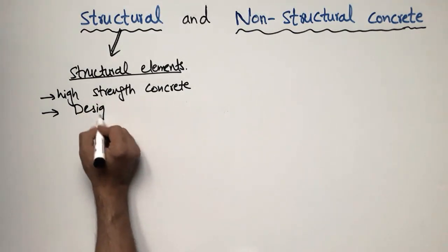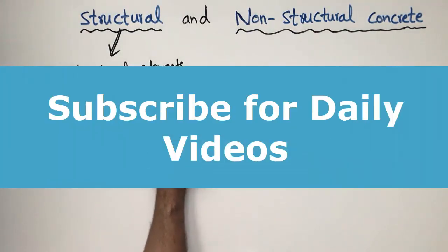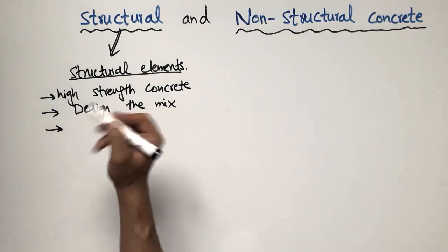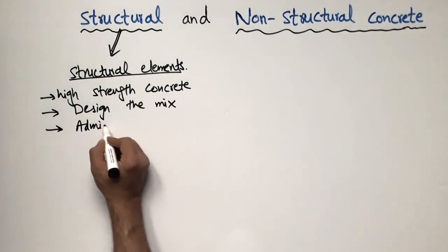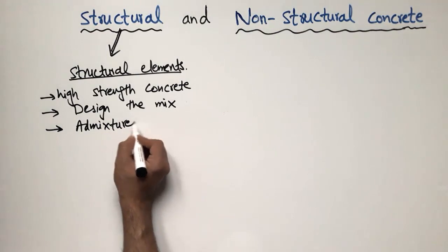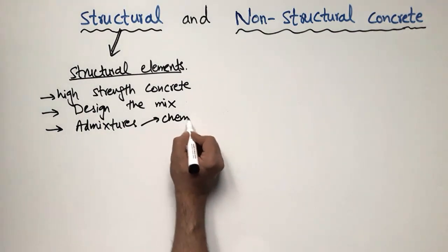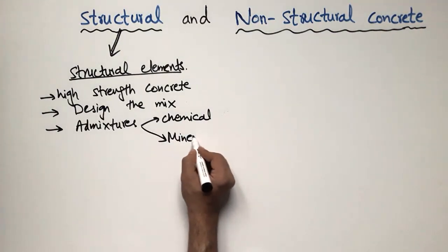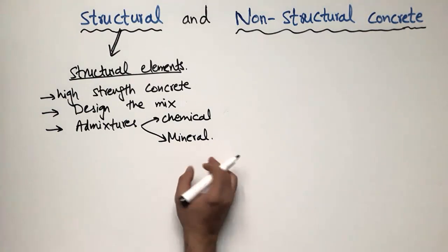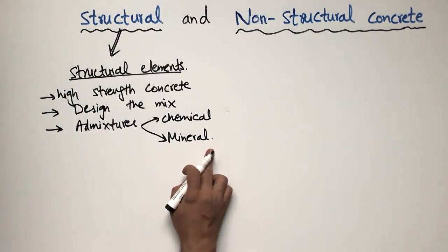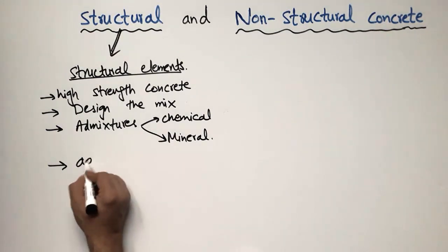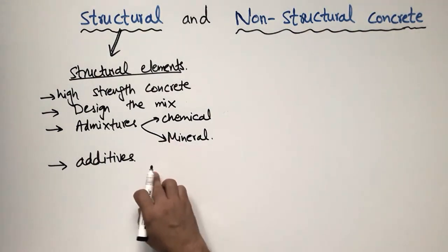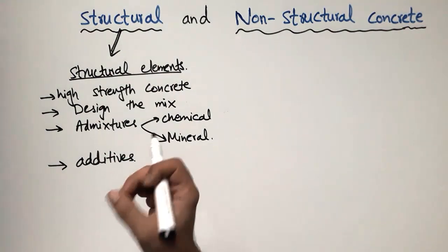Engineers must design the mix for structural concrete; you should always provide a design mix for this type of concrete. Admixtures are also used, such as chemical admixtures for rheological properties and mineral admixtures for pozzolanic action, which improves strength and durability. Additives are also used to further enhance strength.